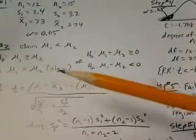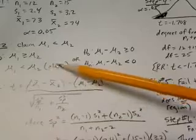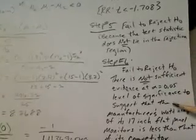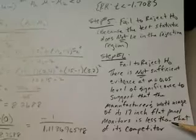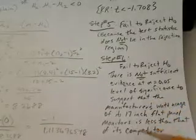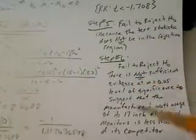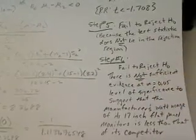In step number six, we continue to say that we failed to reject the null hypothesis, but we have to determine whether we can support or reject our claim. Since we have failed to reject our null hypothesis, we can't accept our claim. Therefore, there is not sufficient evidence at α=0.05 to suggest that the manufacturer's watt usage of its 17-inch flat panel monitors is less than that of its competitor. We always restate what the claim says. We don't change the claim. We can just say that there is or is not sufficient evidence. In this case, there is not sufficient evidence.